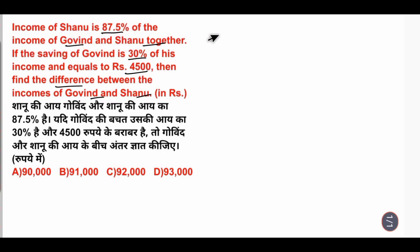So 87.5% - removing the decimal, basic calculation gives us 7 by 8. This means Shanu's income is 7 parts and the total income of both Govind and Shanu together is 8 parts.